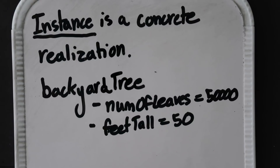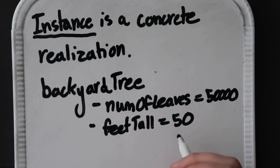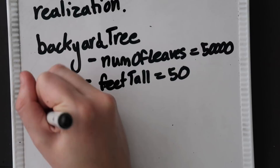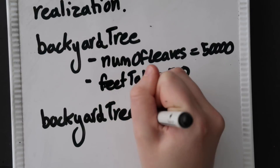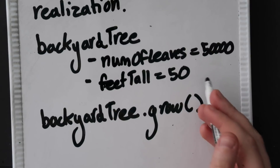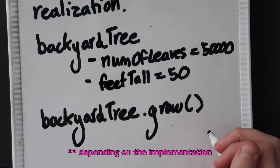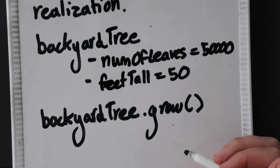An instance is a concrete realization of the object we want to represent. The fields of the class have independent values and we can interact with this object in code — we can call the grow method and actually have this tree grow taller. In this case we have an instance of the tree class called backyard tree. It has number of leaves set to 50,000 and feet tall set to 50. We could call backyard tree dot grow and it would dynamically change the value of feet tall and number of leaves. But how do we create these trees? It's all through constructors.